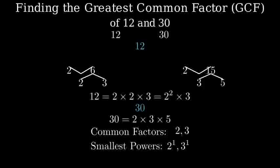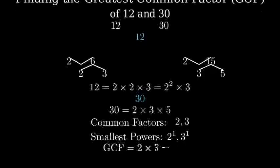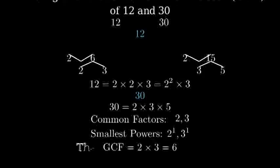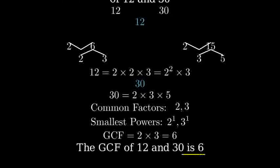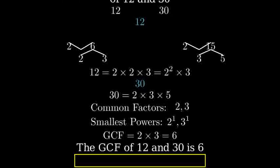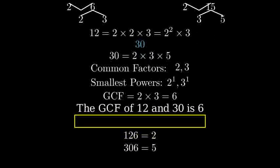To get the greatest common factor, we multiply these common factors together. 2 times 3 equals 6. Therefore, the greatest common factor of 12 and 30 is 6. We can verify this is correct, because 6 divides evenly into both 12 and 30. 12 divided by 6 is 2, and 30 divided by 6 is 5.